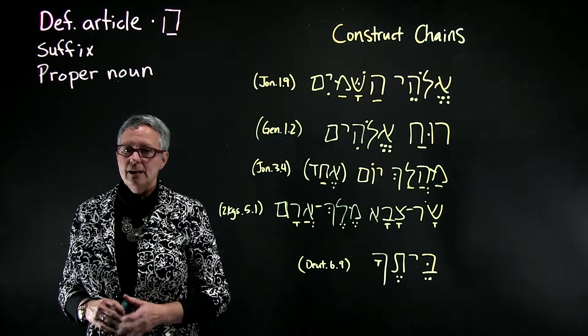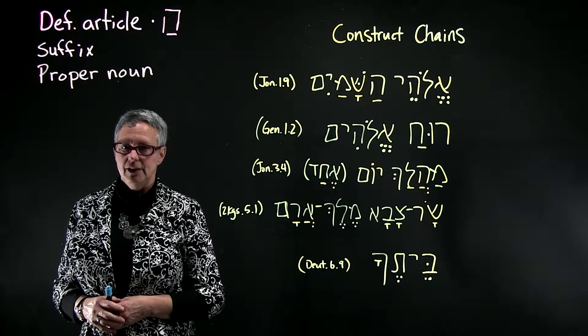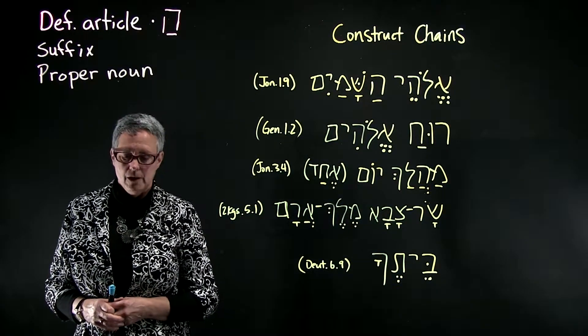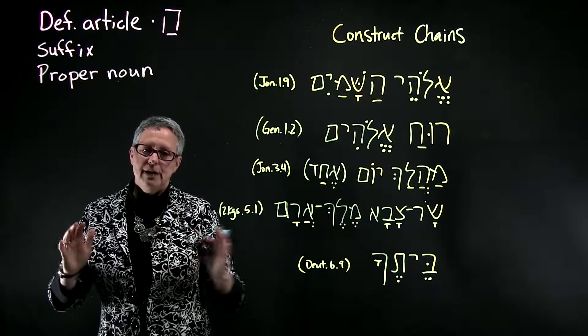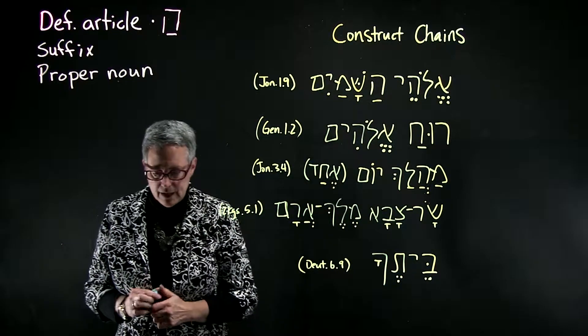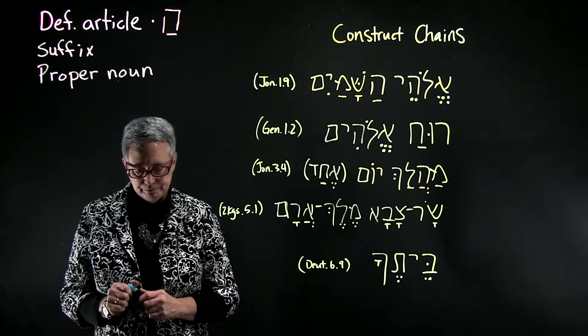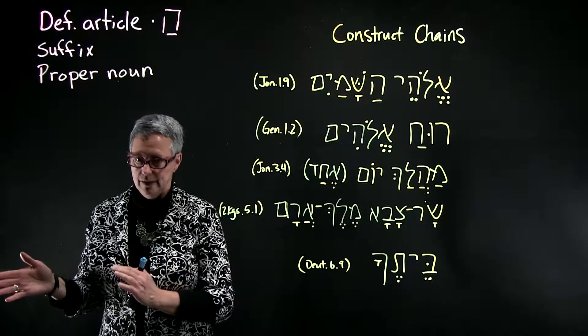A construct chain is two or more nouns consecutively in a sentence. When you have multiple nouns together they often indicate a possessive relationship and we translate them by adding 'of' in between the nouns.